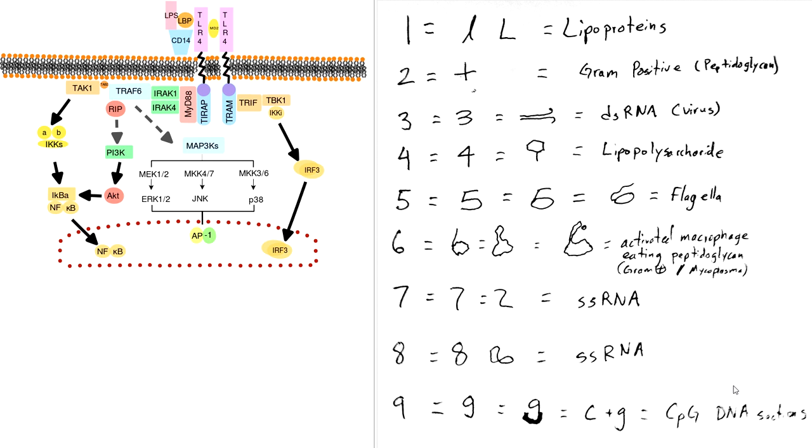Now, which ones are extracellular, which ones are intracellular? Well, they're all extracellular except for DNA and RNA. So if you can remember that, lipoproteins are on the outside, so the receptor's on the outside. Peptidoglycan is on the outside, so the receptor's on the outside. Same for lipopolysaccharides, same for flagella, same for the peptidoglycan here for the macrophages. They're all extracellular.